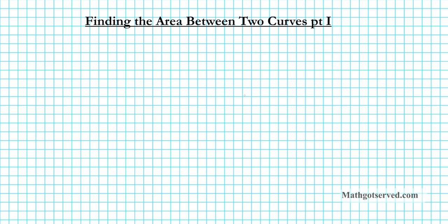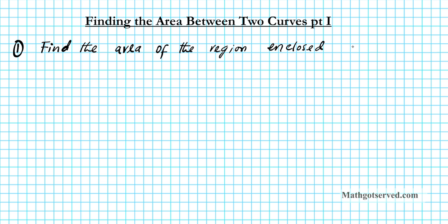Good day students. In this clip we're going to be going over an example on how to find the area between two curves. We are to find the area of the region enclosed by the functions y equals 5 minus x squared and y equals x minus 1.